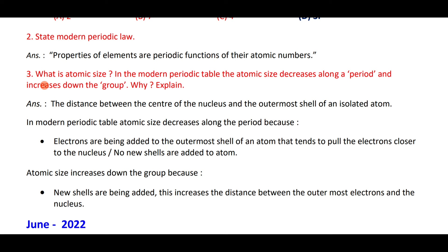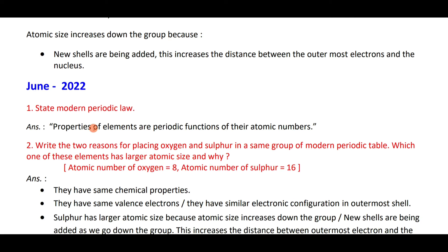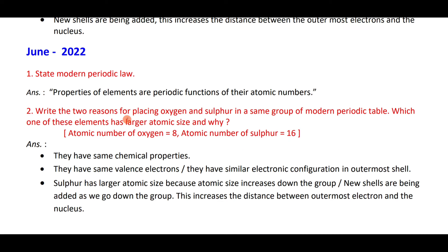Atomic size decreases along a period and increases down the group — because down the group new shells are added, while along the period nuclear force pulls electrons closer. Write the two reasons for placing oxygen and sulfur in the same group of the modern periodic table.